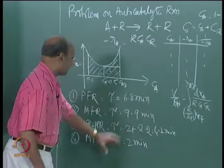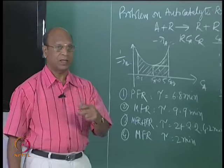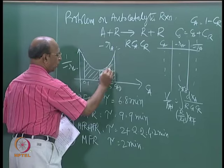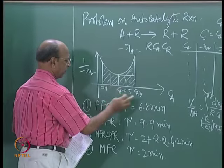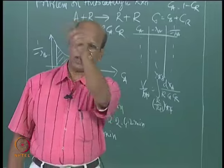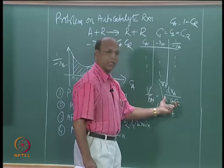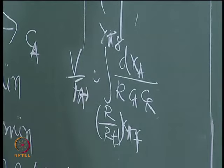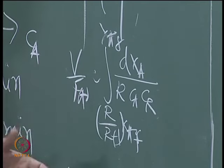This is a nice problem. Graphically, if you want to find the optimal recycle ratio for a recycle reactor, you have to draw lines where this area equals that area, and somewhere you will get R. That is x_A1, not R. So x_A1 equals R/(R+1)·x_AF. Otherwise, differentiate d(V/F_A0)/dR equals 0.